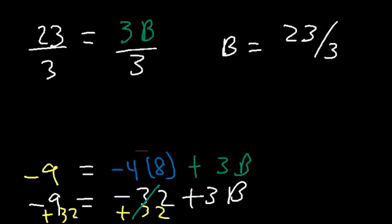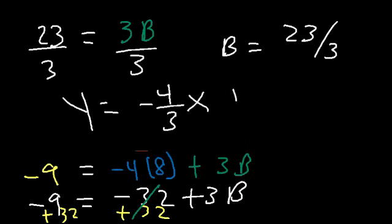Now we have the equation: y is equal to the slope, negative 4 thirds x, plus the y-intercept, 23 over 3. So this is the answer.